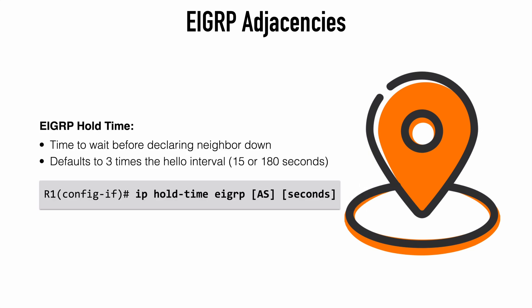The hold time is the amount of time that EIGRP will wait before declaring a neighbor adjacency to be unreachable. If no EIGRP packets are received and that hold time expires, there is a neighbor adjacency loss. By default, the hold time is set to 3 times the hello interval — so 180 seconds on slower links and 15 seconds on most interface types. This can be changed on a per-interface basis with the command IP hold-time EIGRP, followed by the autonomous system number and number of seconds. Note that changing the hello or hold interval individually does not affect the other timer, so you should change both to maintain the 3x ratio.